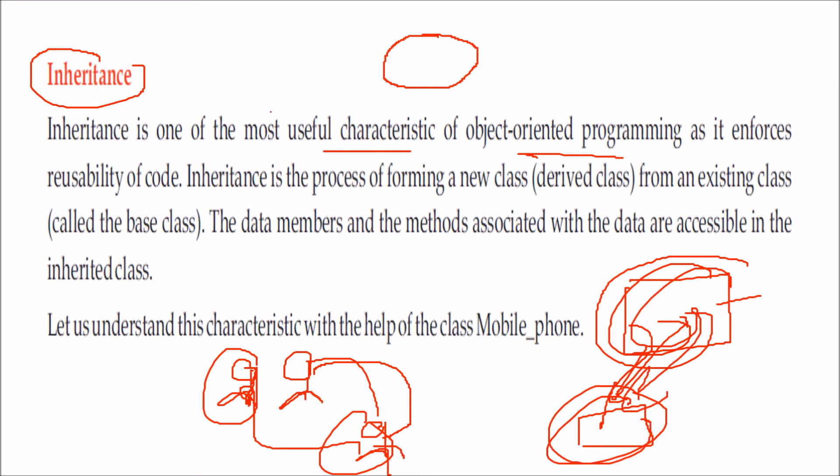Inheritance is actually the process of forming a new class which is the derived class from the existing class, we call it as a base class. And the data members and methods associated with this data are accessible to the inherited class.